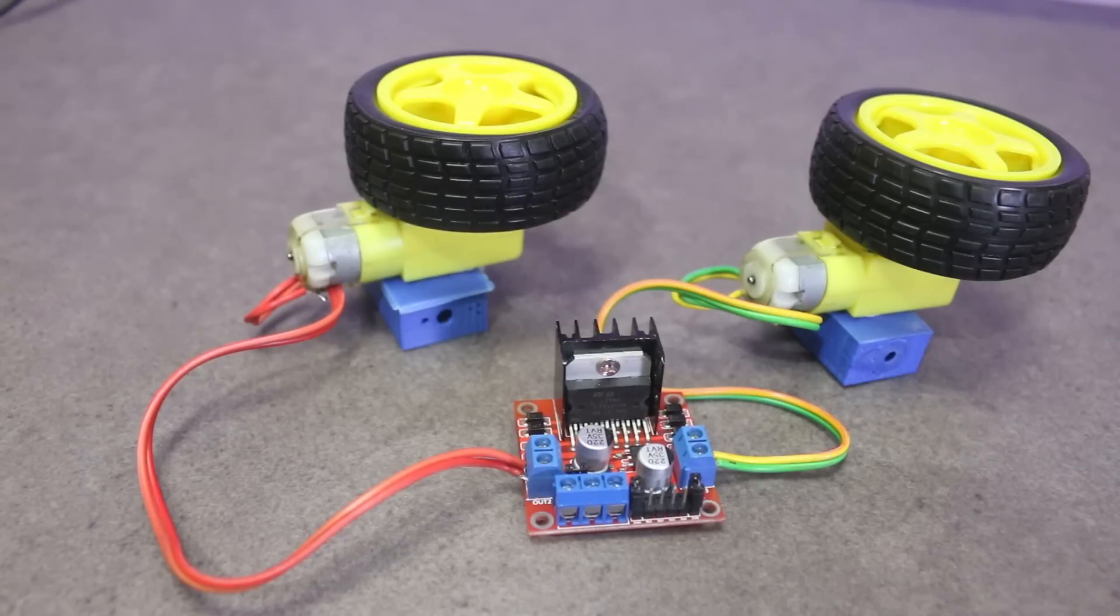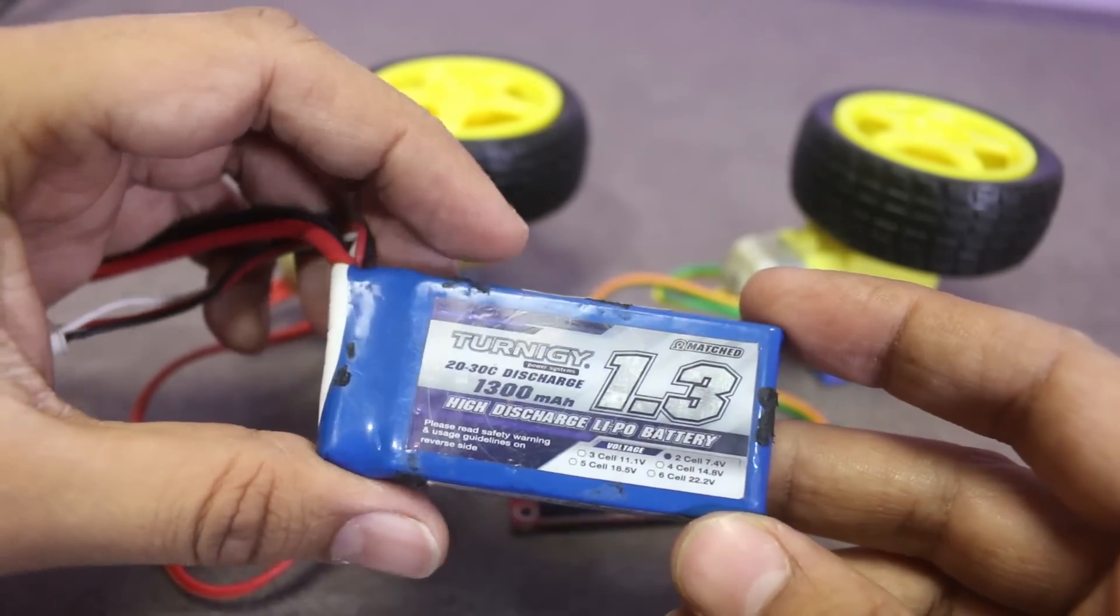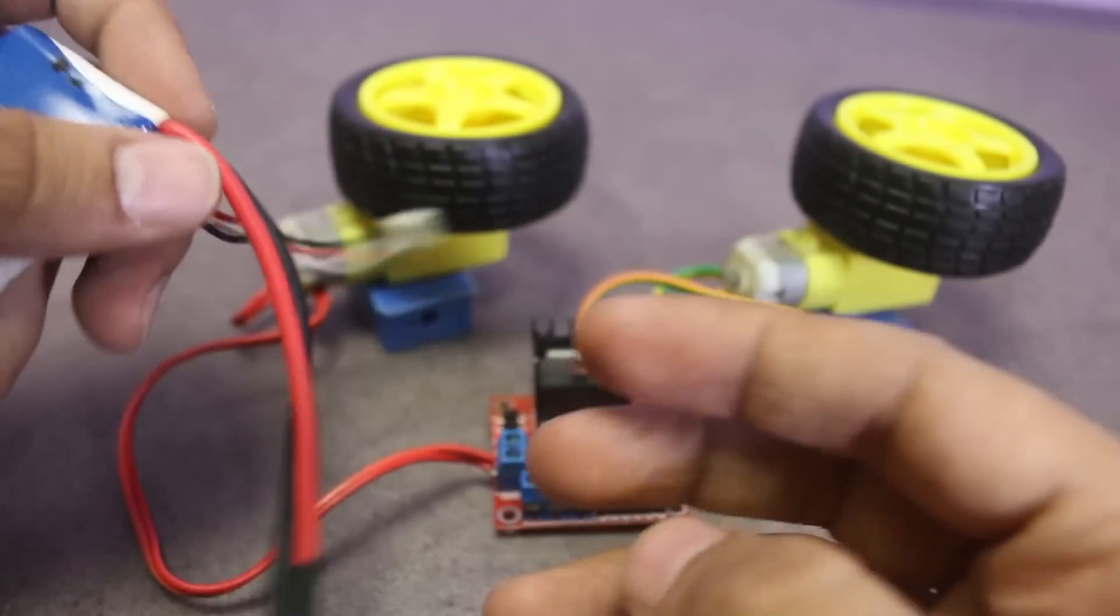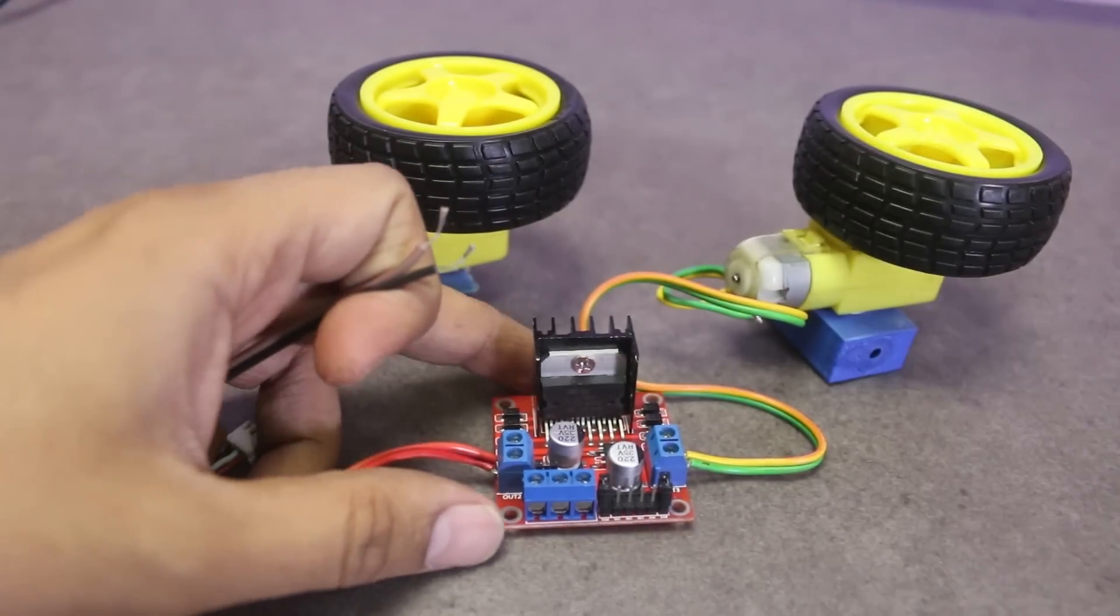Motors are connected. Now connect power supply. I am using a 7.4V LiPo battery to power this module and run the motors. Connect the positive wire with positive connector and negative to the ground.